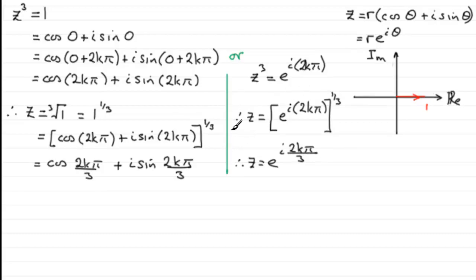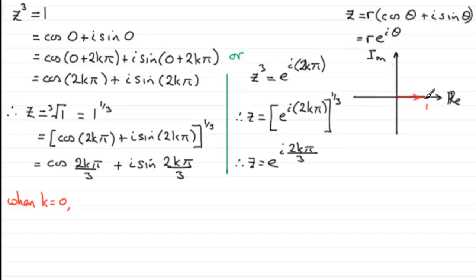When k equals 0, we get cos(0) + i·sin(0), which is just 1 — the result we had on the Argand diagram. So z equals 1 for the first root.